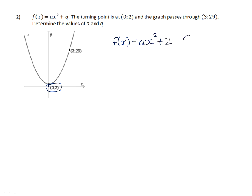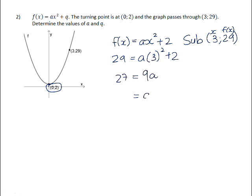To solve for a, use the given x and y values. Substitute them: 29 equals a times 3 squared plus 2. Subtract 2 from both sides, then divide by 9. Therefore, the graph is f(x) equals 3x squared plus 2.